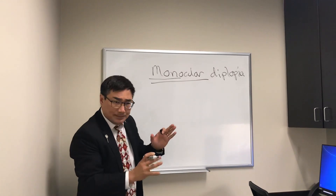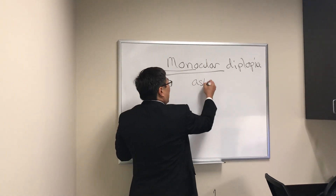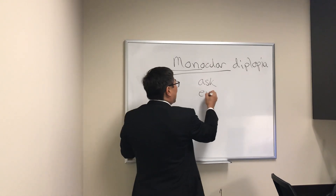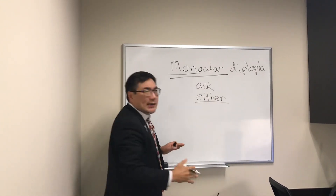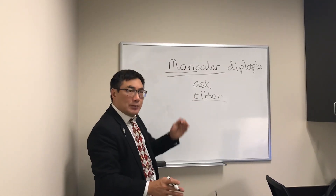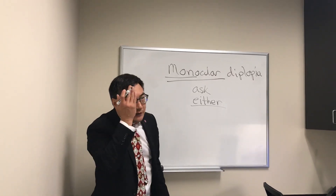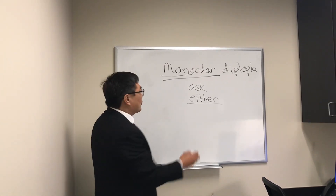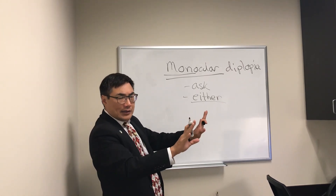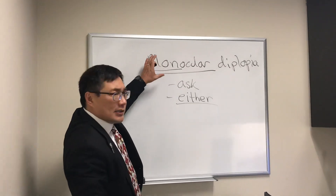To determine whether it's monocular diplopia, we ask the patient if it goes away when covering one eye — and you have to ask about either eye. If they cover the affected eye the monocular diplopia will go away; if they cover the unaffected eye it will persist. Usually it's described as a second ghost image superimposed on the first — not two clear separated images. That ghosting is a tip-off that it's monocular.